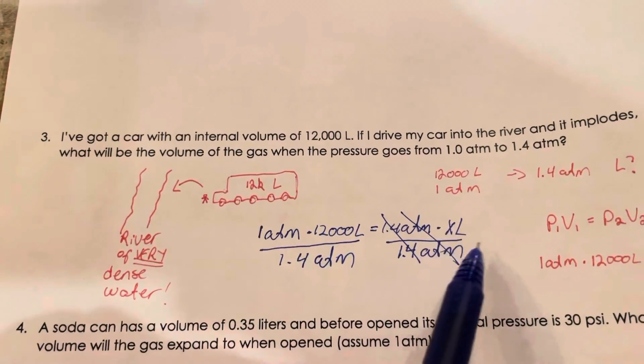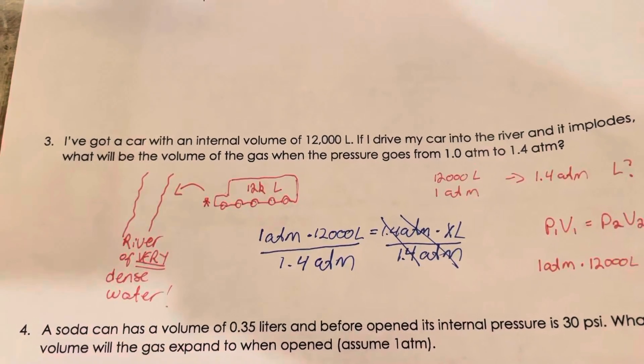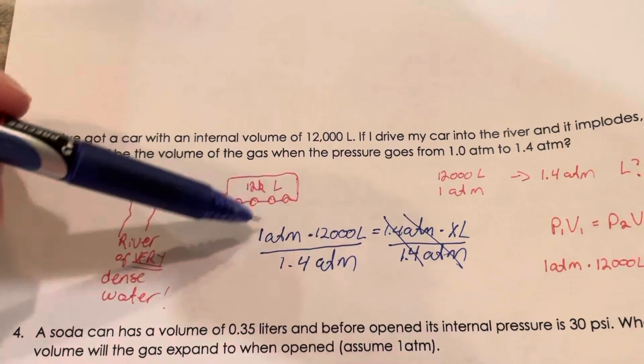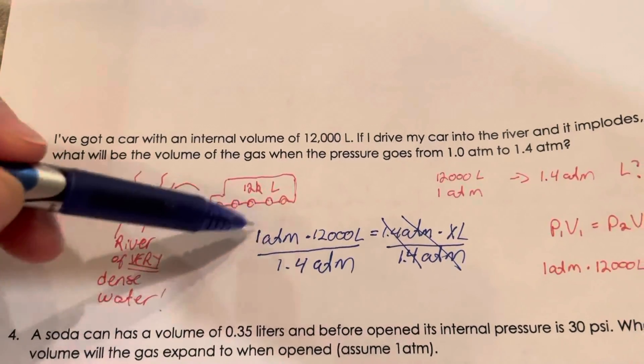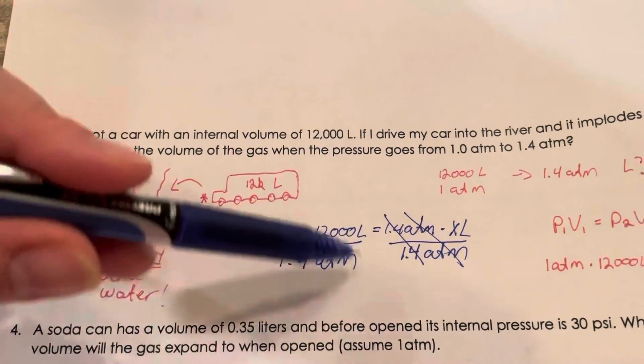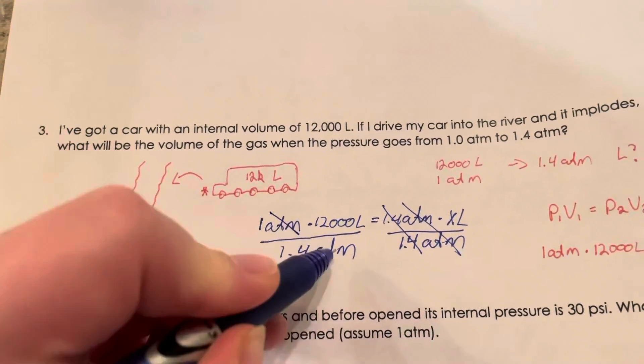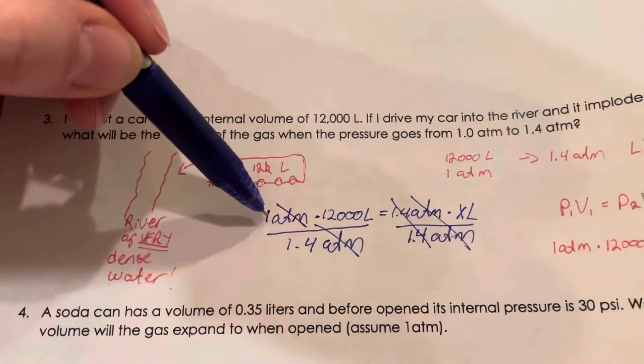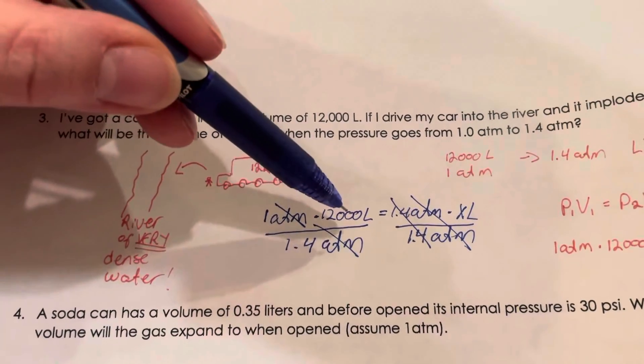So I'm gonna end up with my X alone and I just have to take out my calculator and solve this. So I have atmosphere here and here, I can just cross that out.